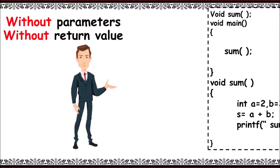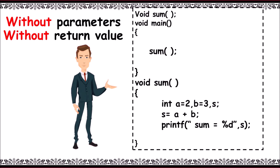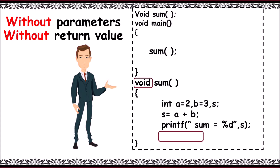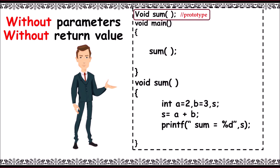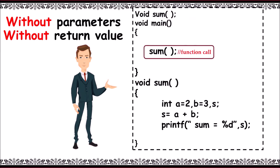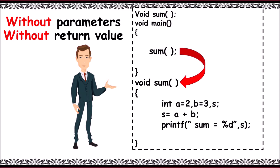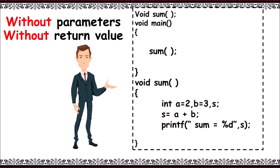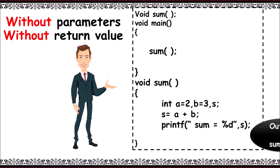Let's start with without parameters and without return value. In this example, you can see a function named sum without parameters in brackets. You can also observe no return statement and return type mentioned as void, indicating no return value. Execution goes: function prototype void sum, main, function call sum with no parameters, control goes to function definition sum, variables a, b, s are declared and values are assigned. Then s is equal to a plus b — 2 plus 3, sum is stored in s. Printf prints output: sum is equal to 5.